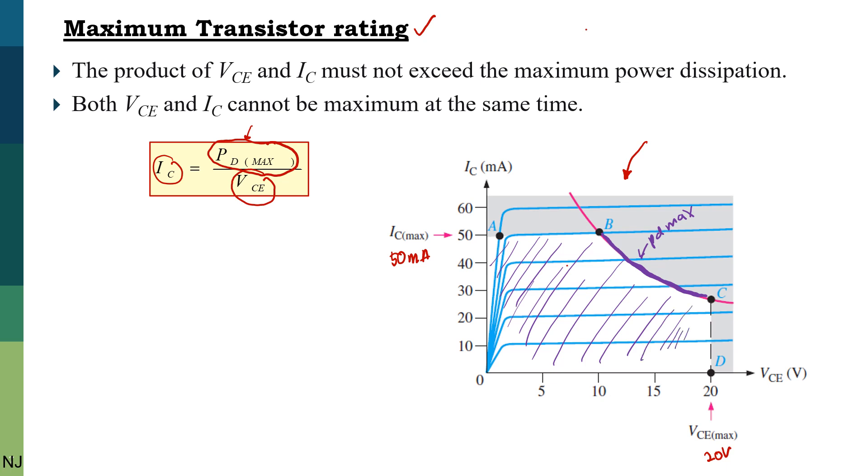This curve shows that the transistor should operate within this limit only. So the transistor cannot operate in the shaded graph here. This is the shaded graph.